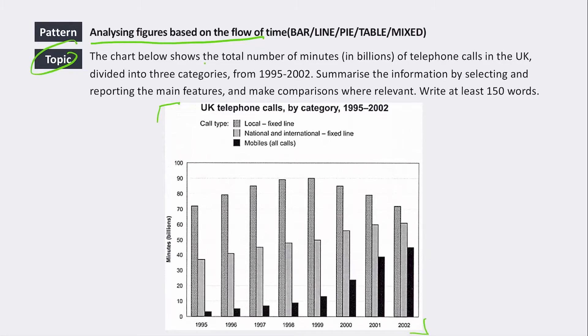The chart below shows the total number of minutes of telephone calls in the UK divided into three categories from 1995 to 2002. Summarize the information by selecting and reporting the main features and make comparisons where relevant.